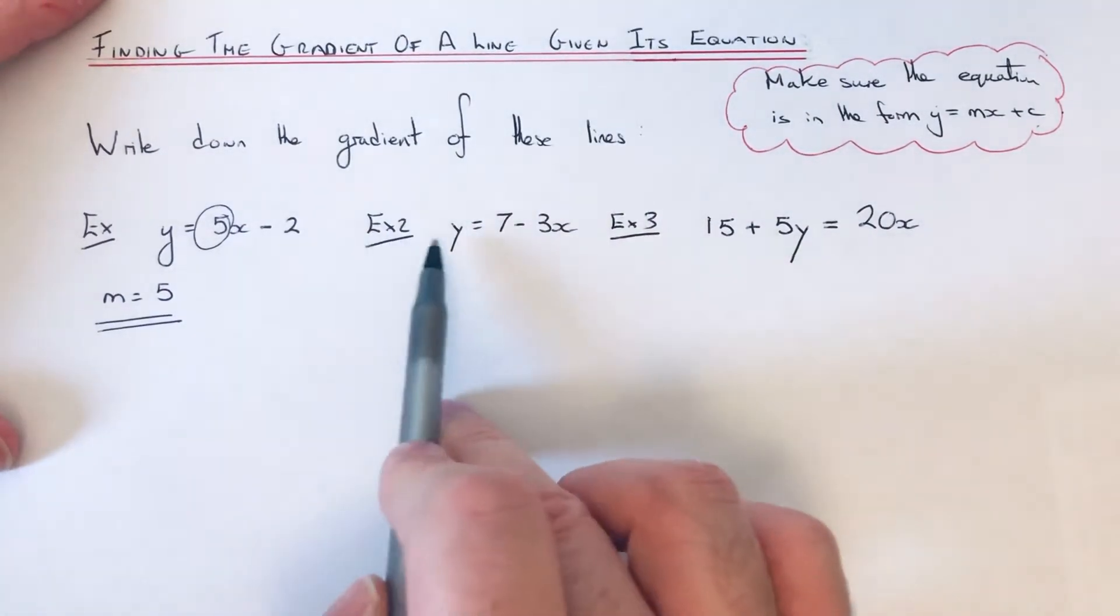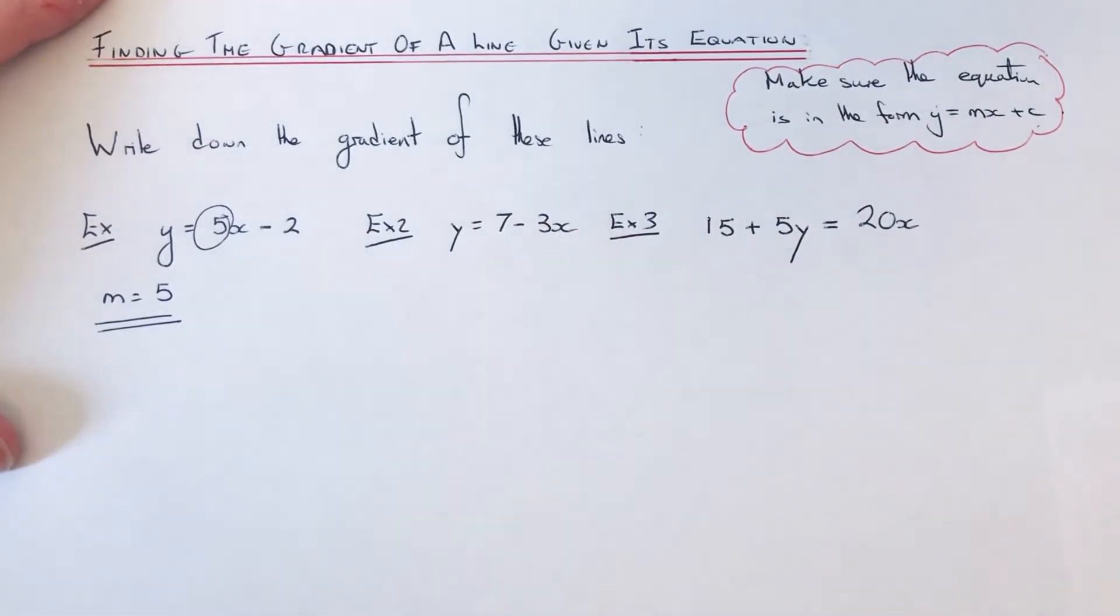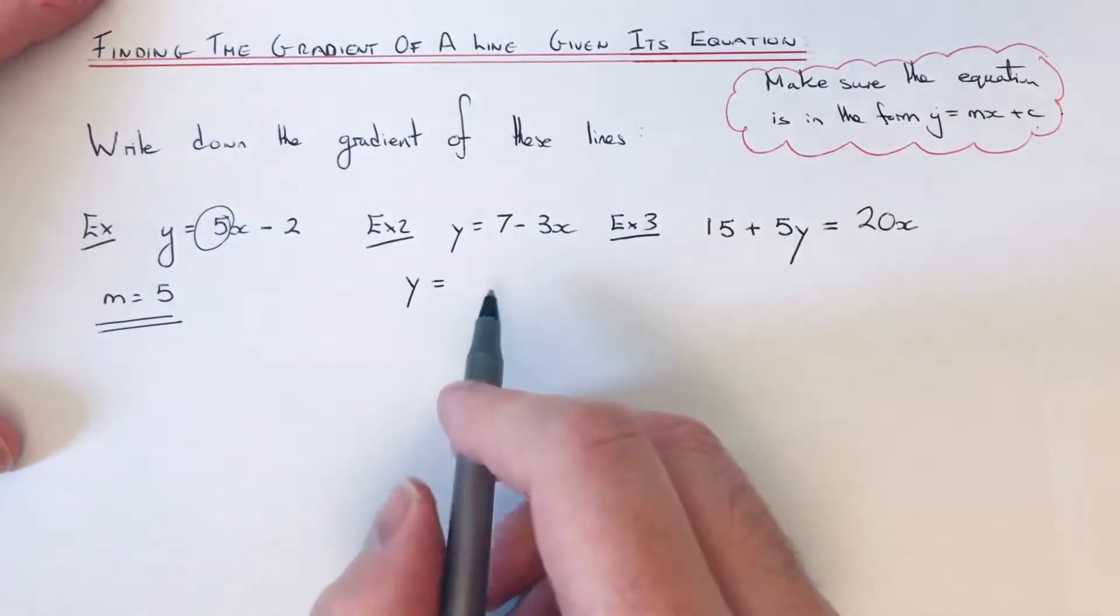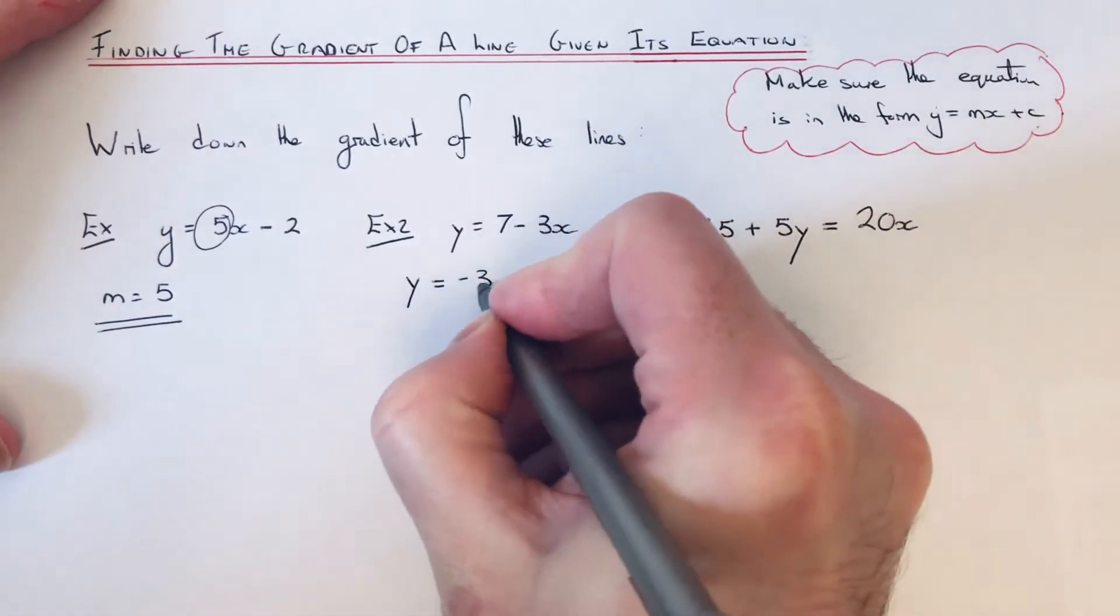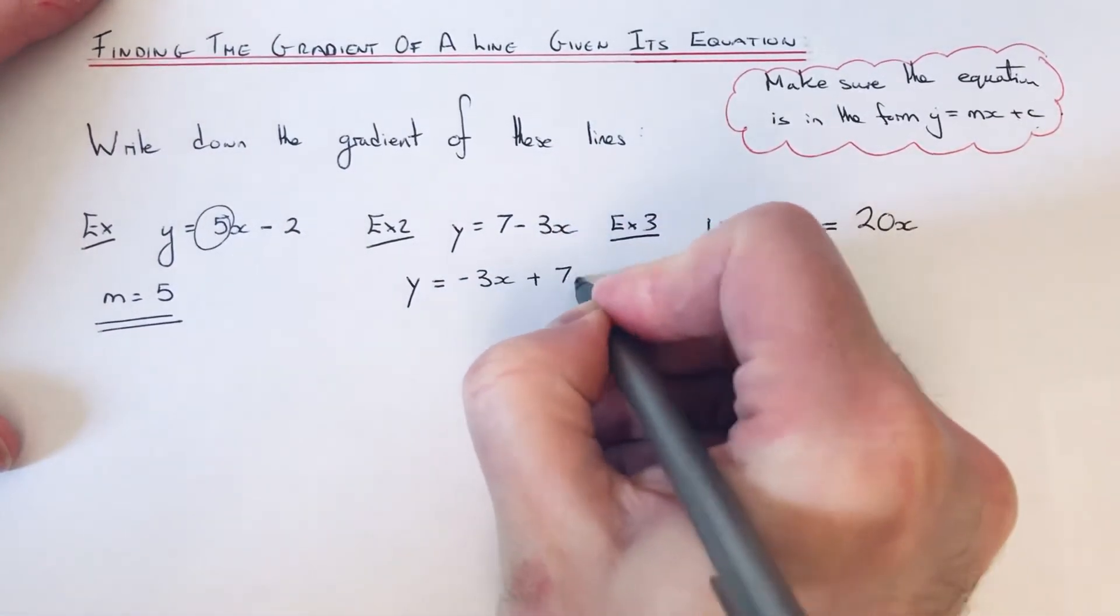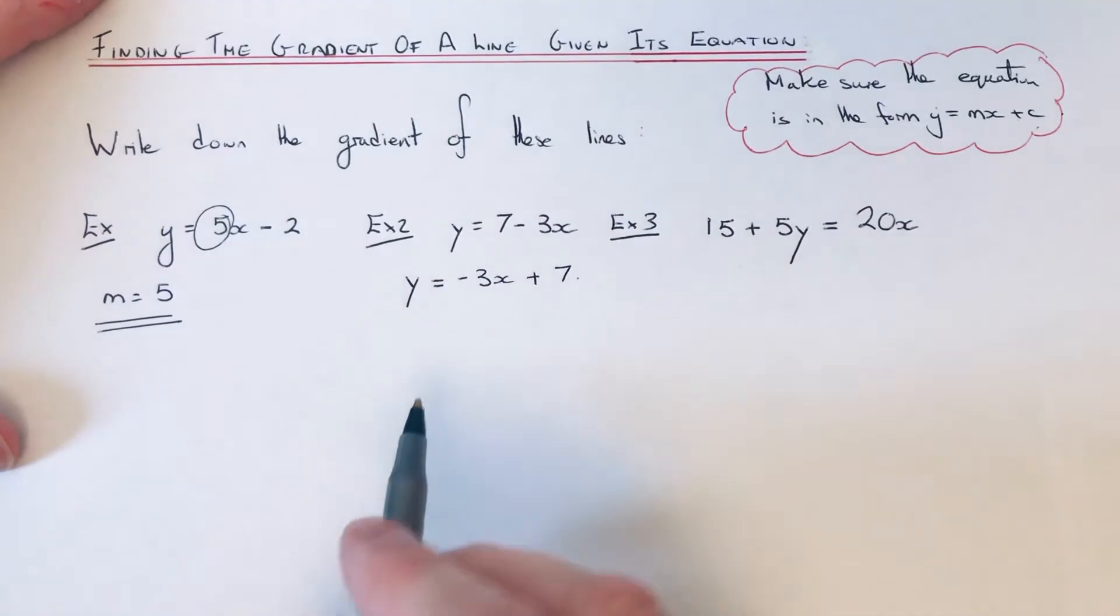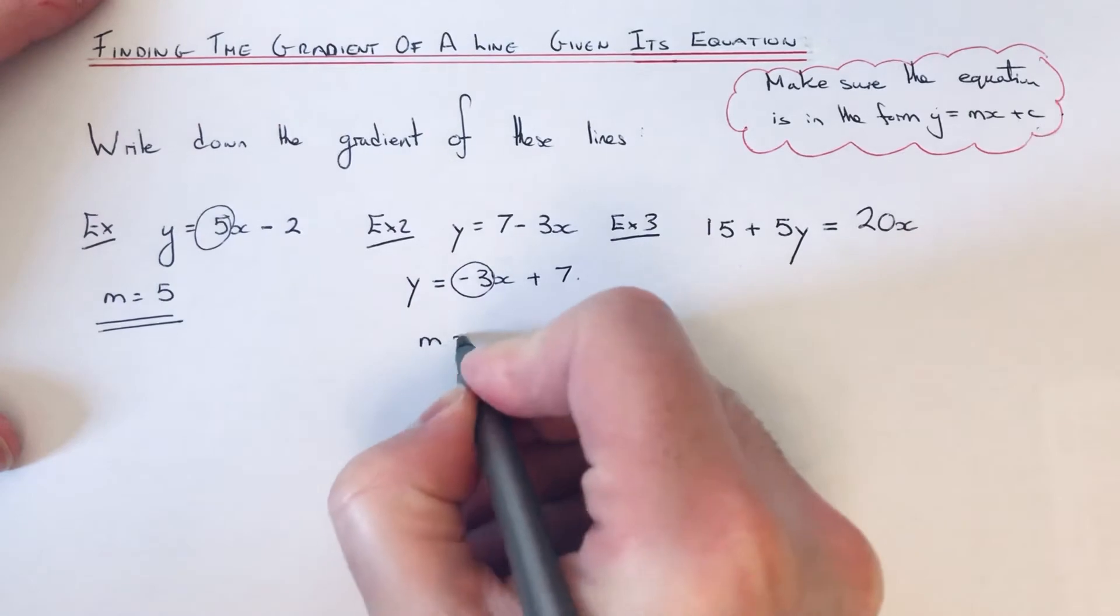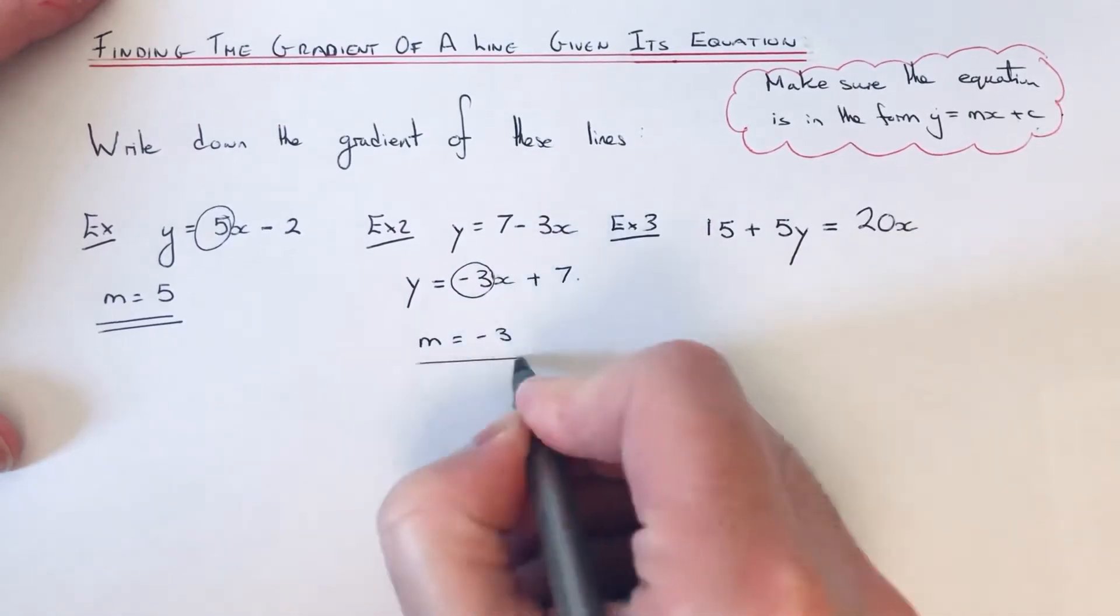Let's have a look at our second example. This time we have y equals 7 minus 3x. It's in a slightly different order to the formula above. You could rewrite it before you start finding the gradient as y equals minus 3x plus 7. You can see that the number before x is minus 3, so m equals minus 3.